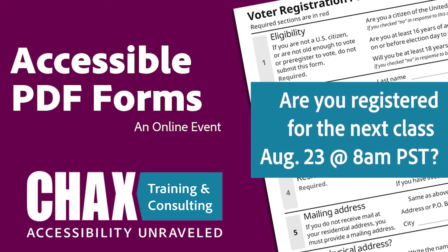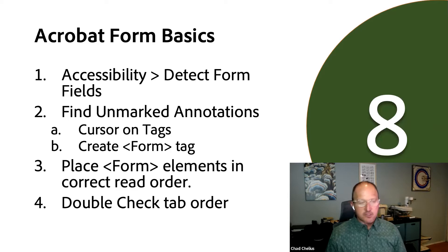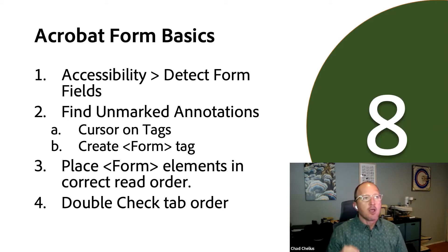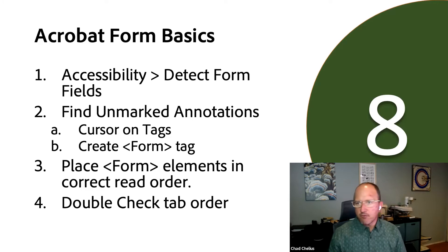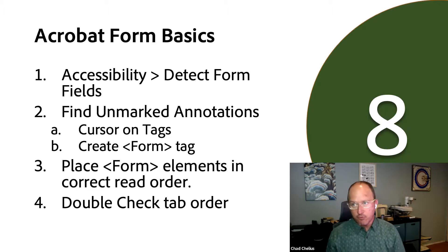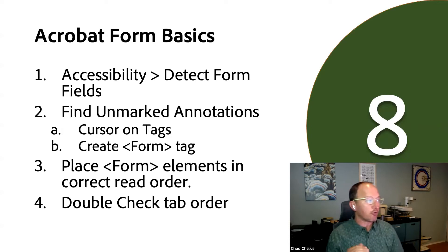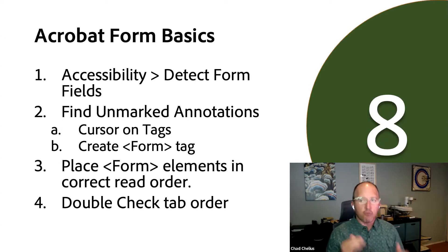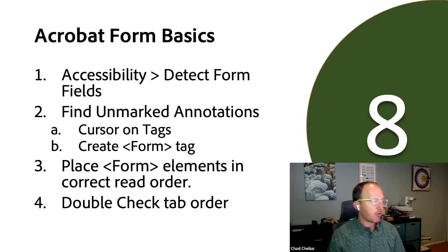One of the big challenges when working with form fields is that as you add them, they are not tagged — and this is a huge fundamental problem. You're going to get an error on every single form field you create. There's a command in the Tags pane called 'Find Unmarked Annotations' that allows you to tag all those form fields appropriately, but there's a trick I'm going to show you.